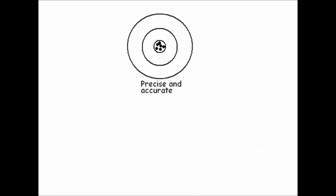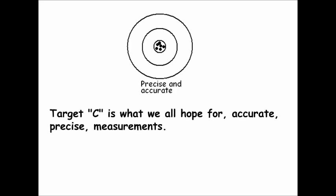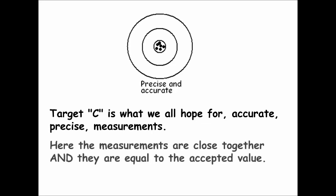The precise and accurate target is what you ideally shoot for when making measurements. You want your numbers to fall close to each other and right on the accepted value. This is what we all hope for: accurate, precise measurements where the values are close together and equal to the accepted value.